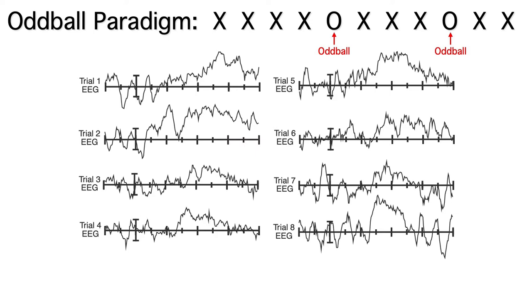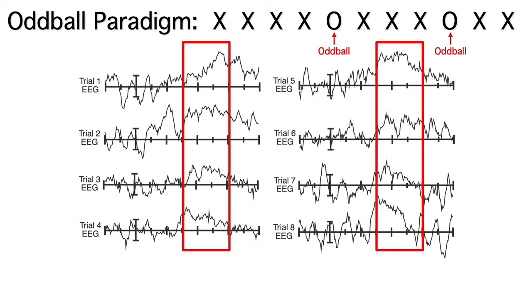You can see a lot of variation from trial to trial, but all 8 trials have a positive voltage from approximately 300 to 600 milliseconds. That's the P3 wave, which is a very large positive component that you get for oddballs in this paradigm.